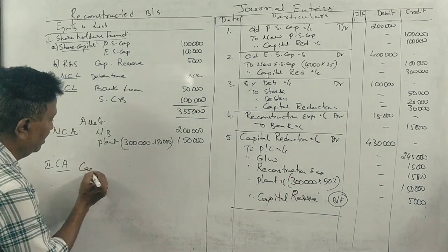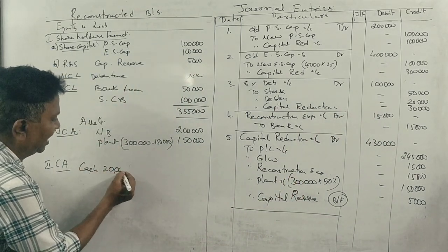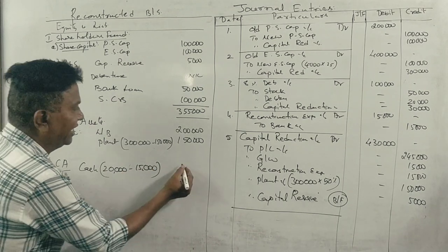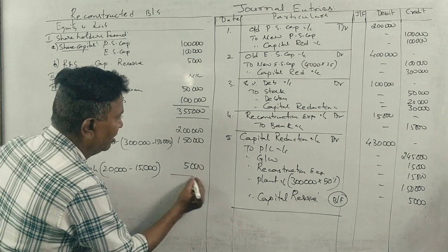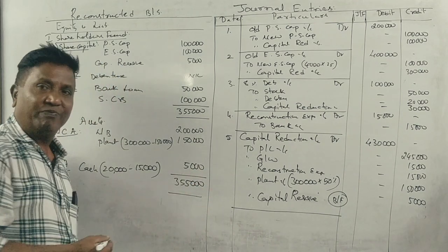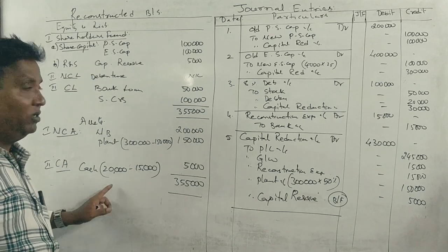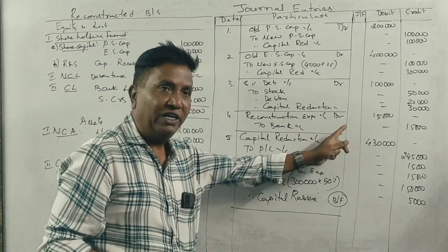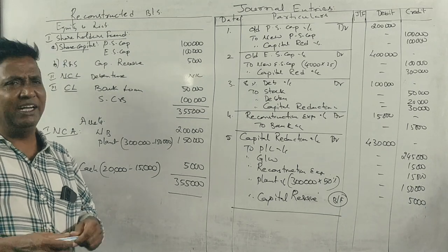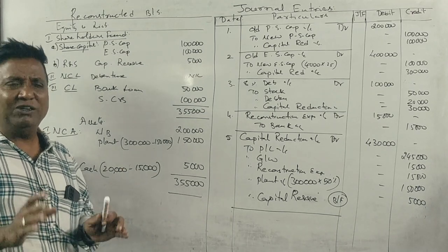Cash balance is calculated as: original cash minus expenses paid.